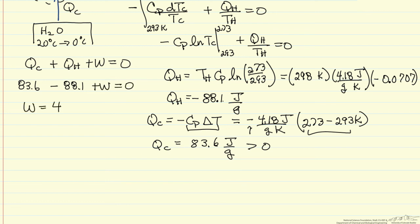So W equals 4.5 joules per gram. That's positive. That's the minimum work. That's what we're trying to calculate for cooling water down. Of course, the real system is going to take significantly more than this.